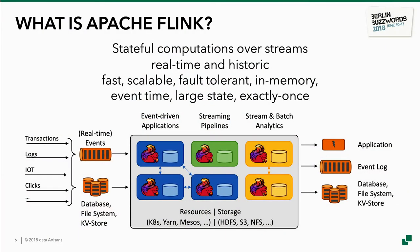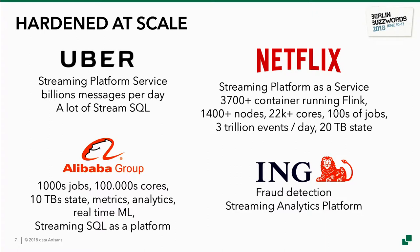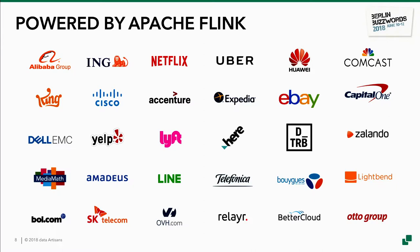Flink has a couple of nice features. It can process real-time and historic data streams. It is a stream processor with very low latency. It's fault-tolerant, so you can get exactly-once semantics for your state. It does lots of in-memory processing, features event time processing, and it scales very well — people use it at very large deployments. Notable users include Netflix, which processes three trillion events per day and has jobs in production with 20 terabytes of state. There's also Alibaba, who built a stream processing platform based on Flink, and ING using it for fraud detection.